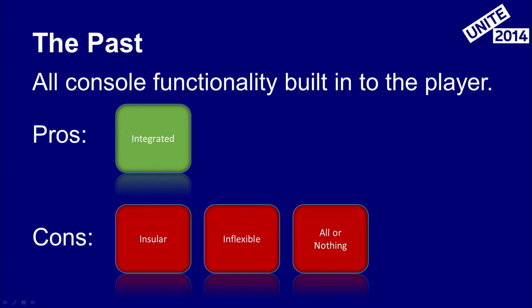In the past, consoles on Unity have just embedded all platform-specific functionality into the engine. This has been a blessing and a curse — it's tightly integrated, which means that everything works together. But it also means that features are not necessarily visible to you. The core of Unity gets a lot more eyes because it's visible by all platforms, whereas platform-specific code tends to get a subset of the Unity community looking at it. Sometimes there are bugs in these platform-specific features that have hindered you from shipping.